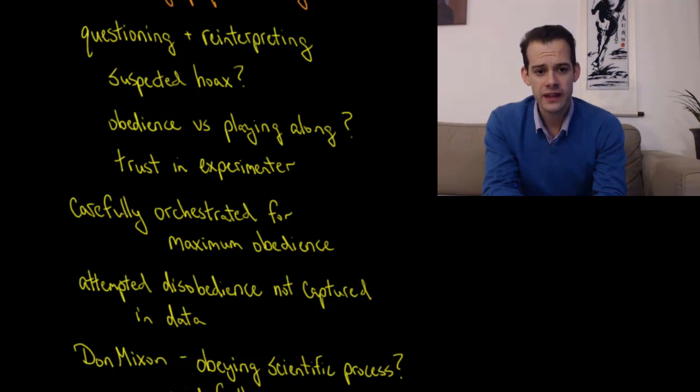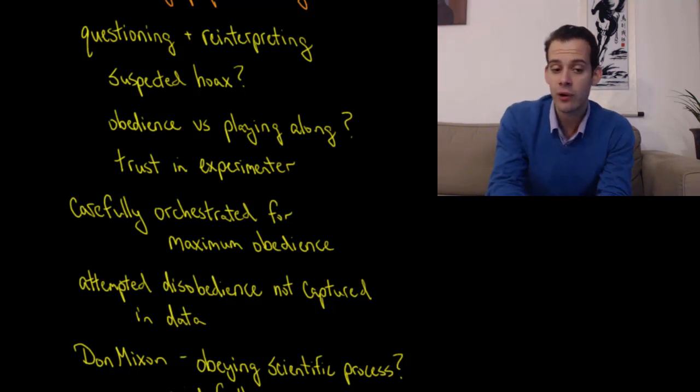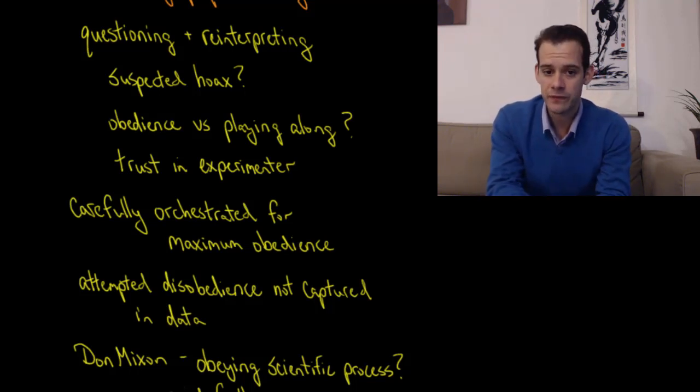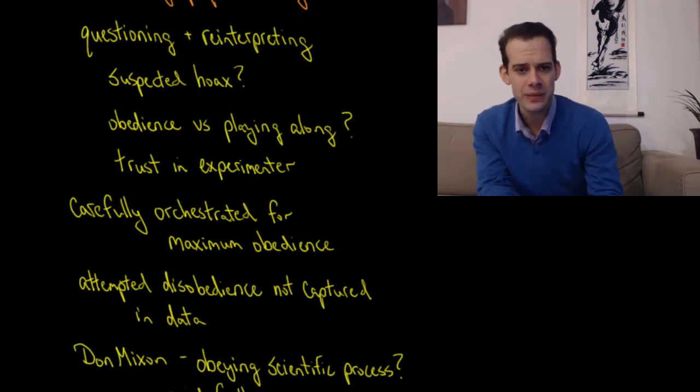And it's also important to note that attempts at disobedience are not captured in this data. When we say that 67% of people went all the way to 450 volts, that ignores some ways that the teachers did disobey. So some of the teachers would do things like read the word pairs to the learner in a way that accentuated the correct answer. And this could be seen as a type of disobedience.